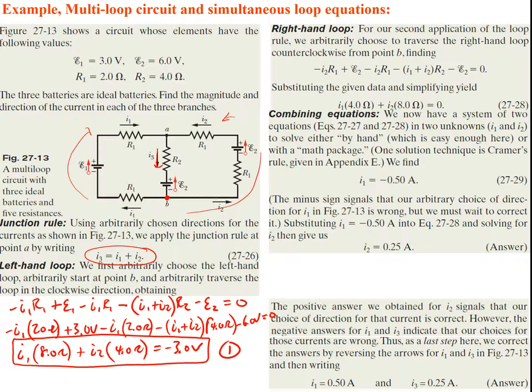For the right-hand loop, starting at point B going counterclockwise: going with the EMF gives positive, then going with the current through each resistor gives negatives, and going against the last EMF device also gives negative. Plugging in values and simplifying gives equation 2, which is similar in form to equation 1.